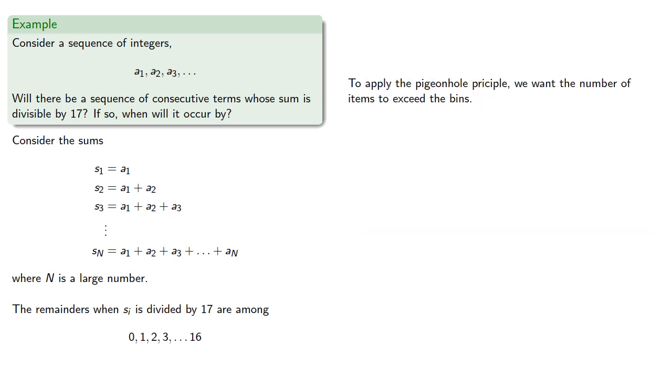Now to apply the pigeonhole principle, we want the number of items to exceed the bins. So if we make the remainders the bins and take N greater than 17, we're guaranteed at least two will have the same remainders.